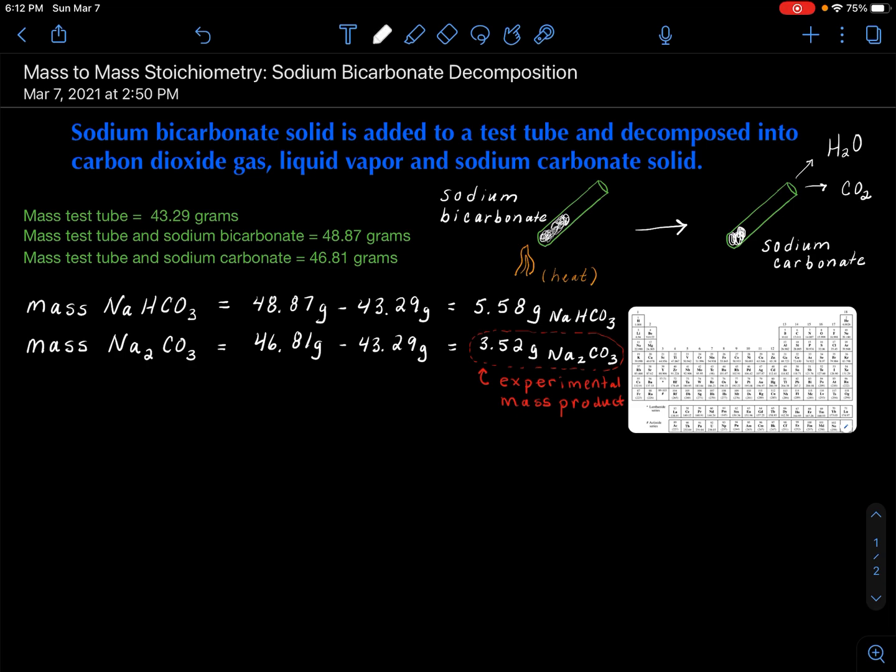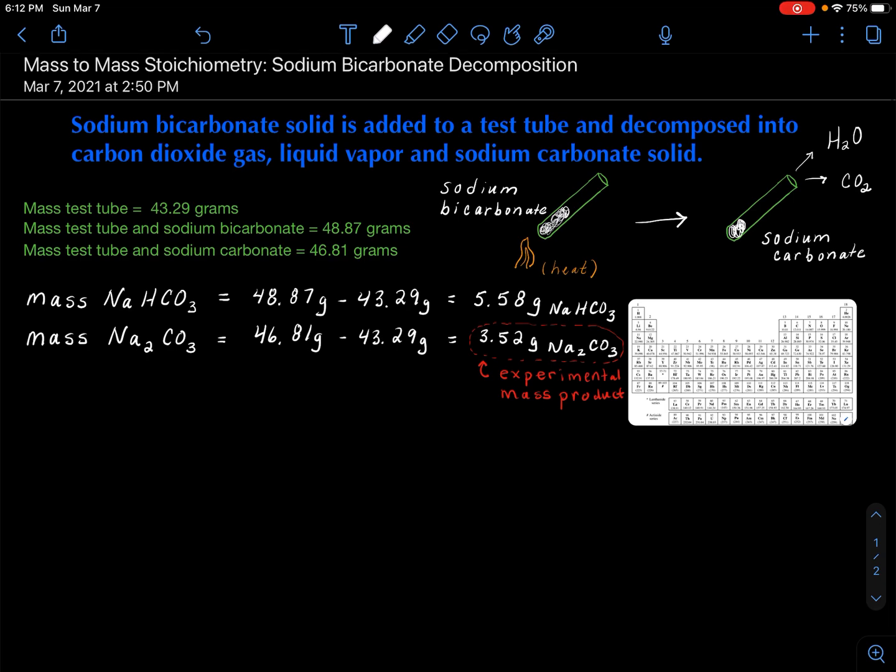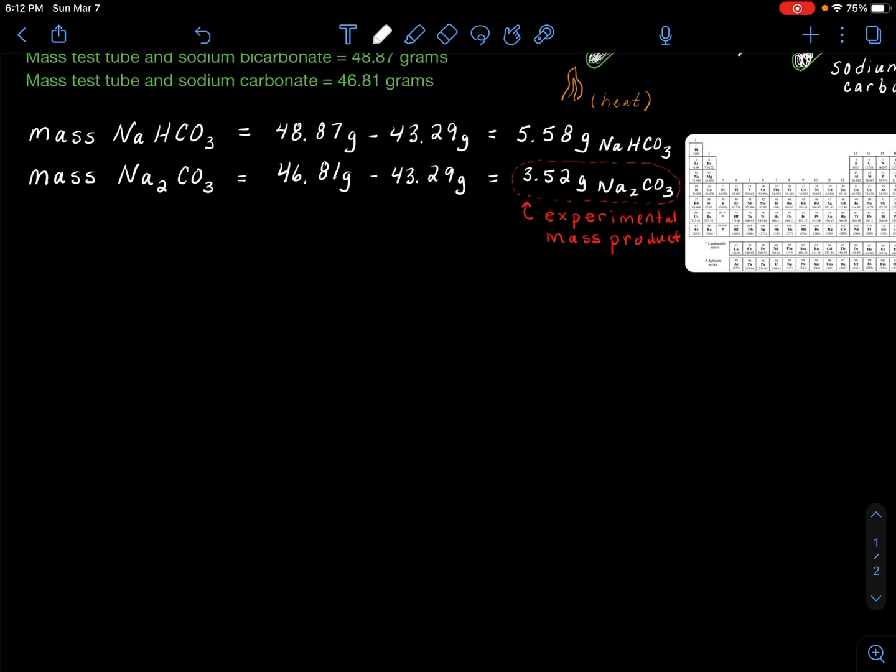Before I can do any mass-to-mass stoichiometry calculations, I need a balanced equation. In any stoichiometry problem, you need a balanced equation. So I have to write that my sodium bicarbonate solid was my reactant. I then heated it, so you can put a little triangle on top of the arrow, and I produced carbon dioxide gas, which I proved in that video. I produced water, and then I made it into a vapor and heated it off. And then my goal here is to prove that the white solid that was produced was sodium carbonate solid.